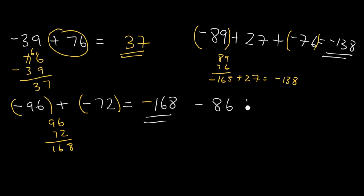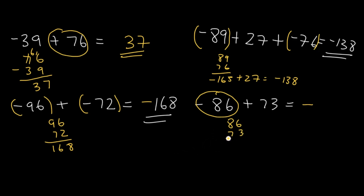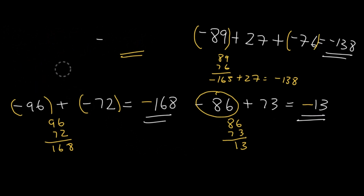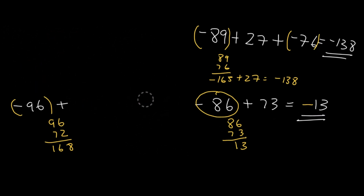Next, solve for negative 86 plus 73. We're adding a negative and a positive, so we take the sign of the bigger number, which is negative 86. Subtract 86 minus 73, which is 13. So our final answer is negative 13. Now let me erase this — I need some space to write more fun problems.